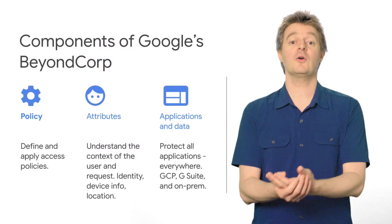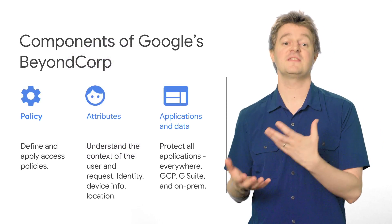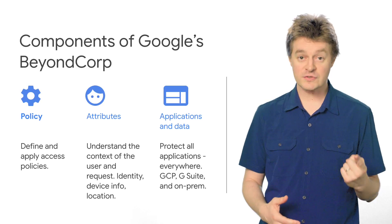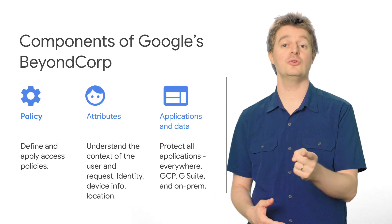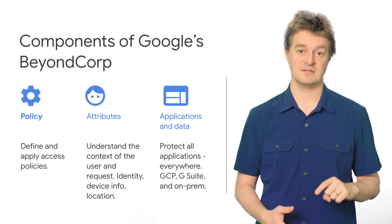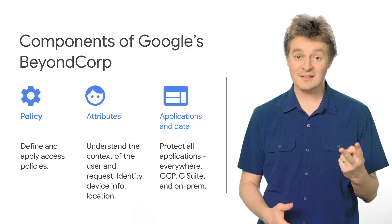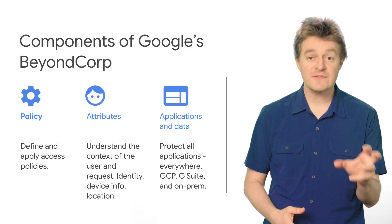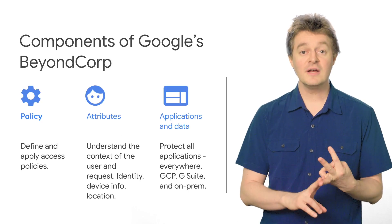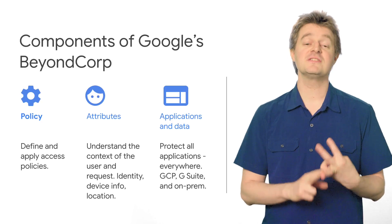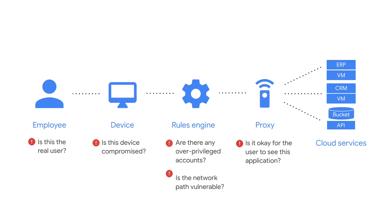At its core, BeyondCorp is comprised of three things that the enterprise can control. First, policies that let you define what and who should or shouldn't have access. Second, the set of attributes about the specific request, giving you important context. And third, applications and data that need protecting. With this in place, BeyondCorp lets us ask various security questions per request at various stages.